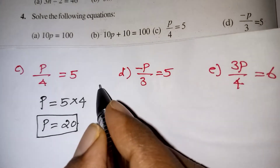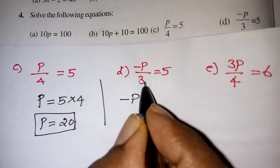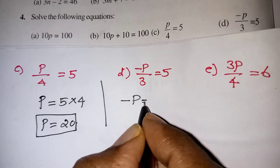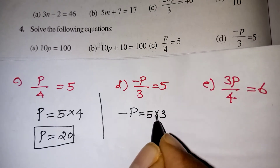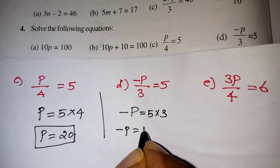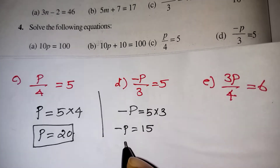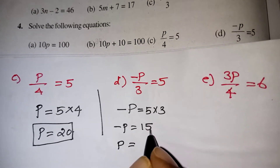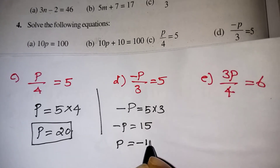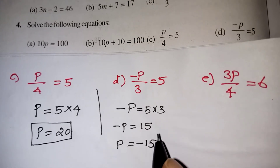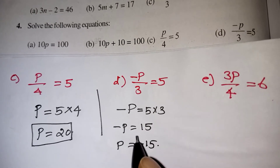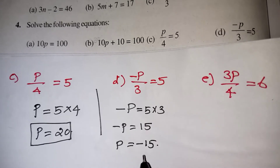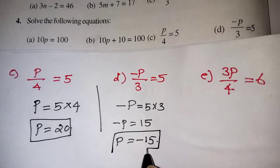Let us do one more problem now. Here minus p by 3 is given. So 3 is in the denominator, that is division — take it to the other side, it will become multiplication. So 5 into 3 gives minus p is equal to 15. But I want the variable value in positive. So if minus p equals 15, then plus p will become minus 15. We are changing the sign for both sides — the minus p becomes plus, and the positive number becomes minus. So p is equal to minus 15 is your correct answer.